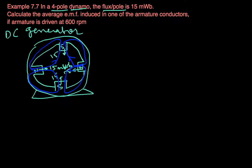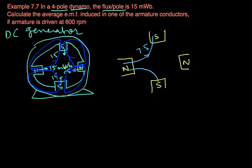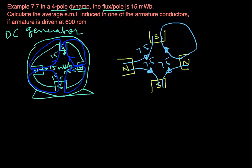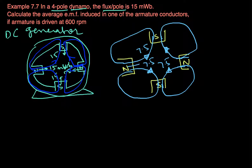Let me show it again: this is north, this is south, this is north, and this is south. So 7.5 mWb flows like this, 7.5 mWb like this, and 7.5 mWb like this. The flux always leaves the north pole and enters the south pole, completing the path through the frame of the machine. So the total flux per pole is 15 milliwebers.